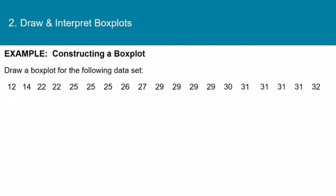Here is another data set to practice with. We'll find the five-number summary without the calculator, since this is the kind of thing you might need to do on a test. First, let's find the median. There are 19 numbers in the data set. 19 plus 1 is 20, and 20 divided by 2 is 10, so the median is the 10th value — counting to that value gives us Q2.